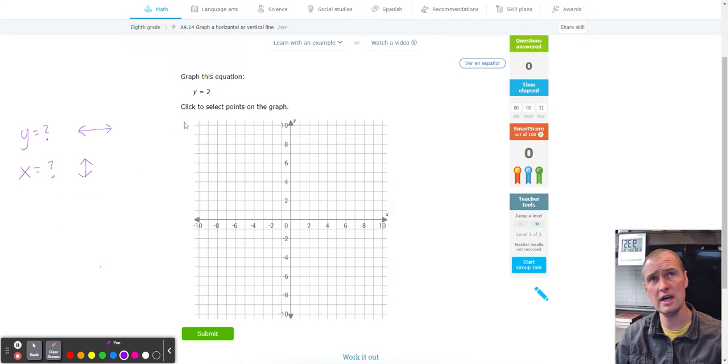So in this case, because we have a line that is Y equals two, on the Y axis we're going to find positive two, which is going to be right here. Now, what this means is when it comes to an ordered pair, they have given you the Y value of two. Now, the X value is anything you want it to be.